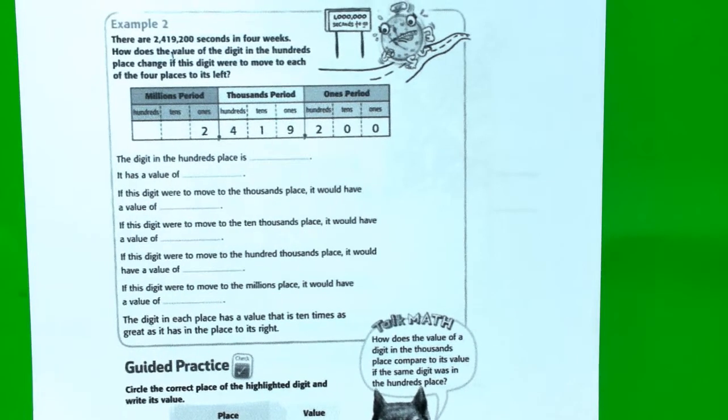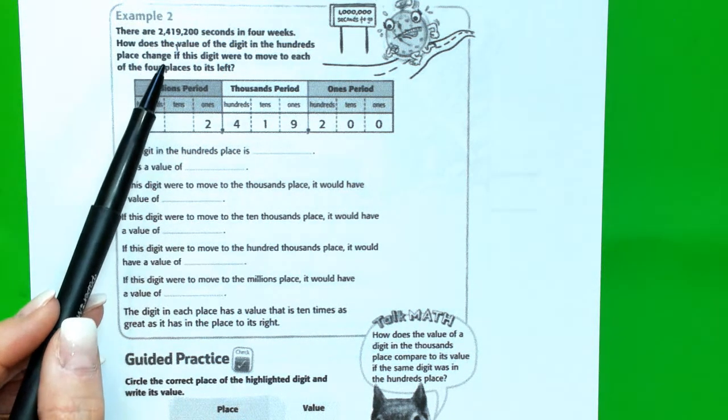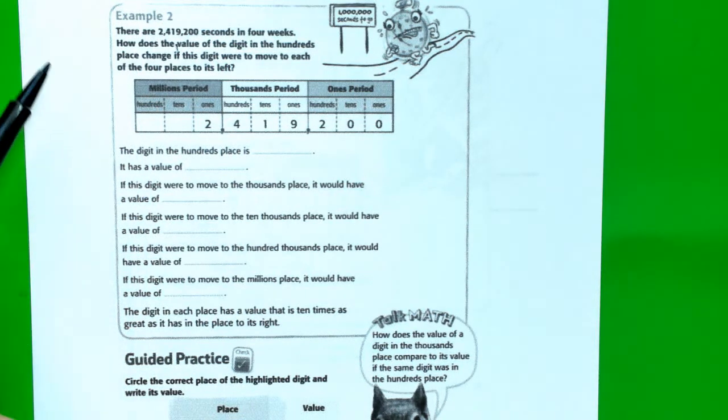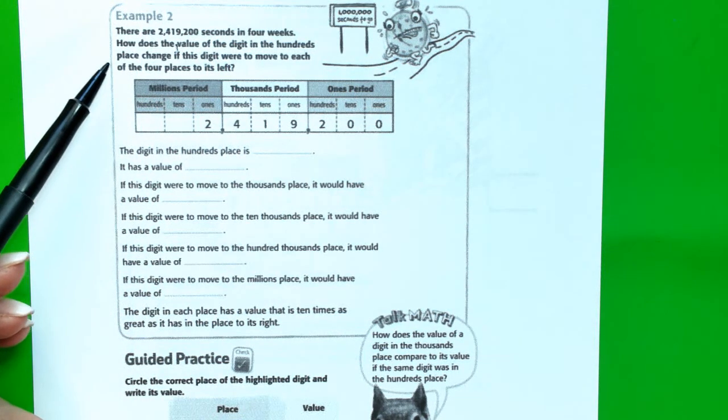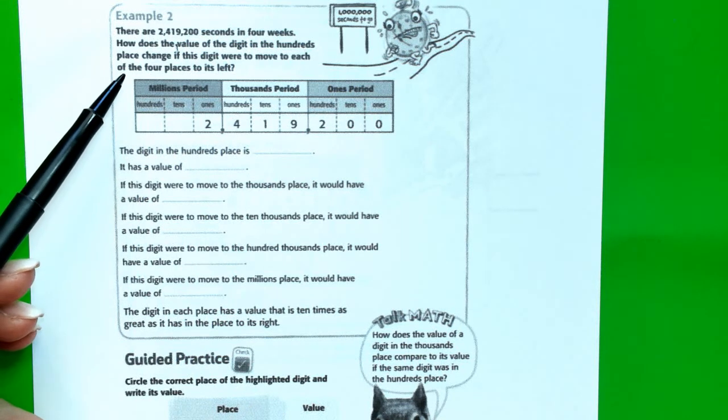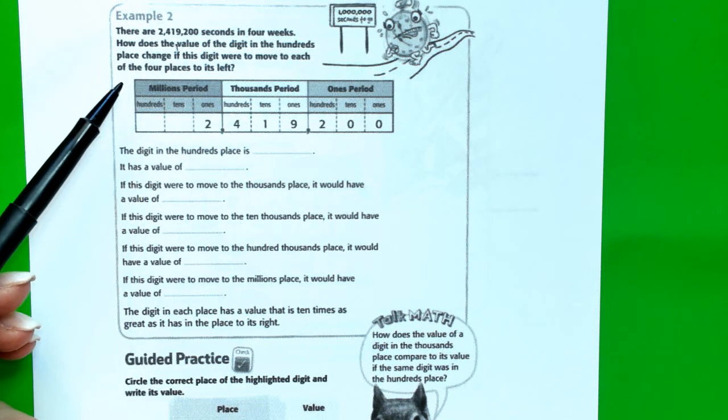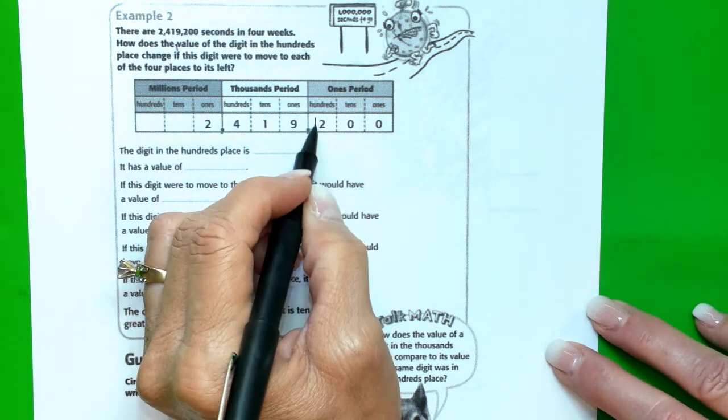So let's look at example number 2. It says there are 2,419,200 seconds in 4 weeks. How does the value of the digit in the hundreds place change if this digit were to move to each of the 4 places to its left?